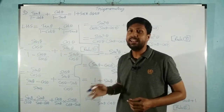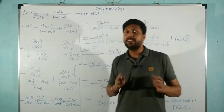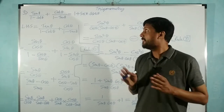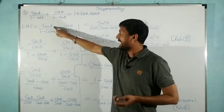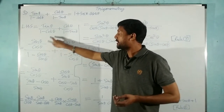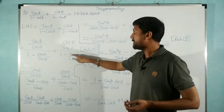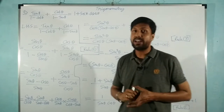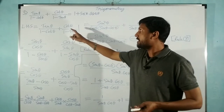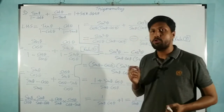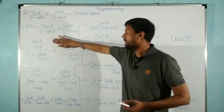We are going to treat the LHS. They have given a clue in the question: express everything in terms of sine and cos. So we are going to use the formula tan θ = sin/cos and cot θ = cos/sin. This is the second rule of our institute — trigonometric identities — by which we have converted tan to sin/cos and cot to cos/sin.